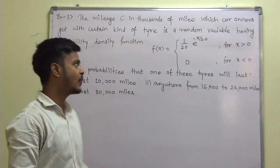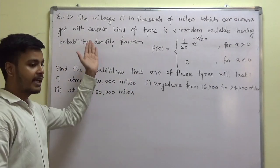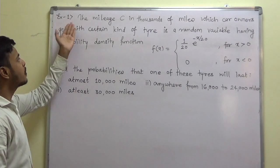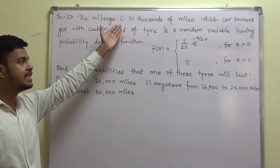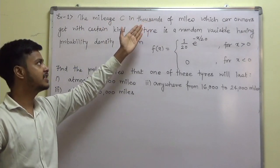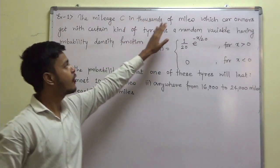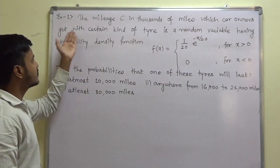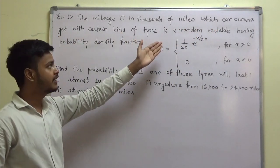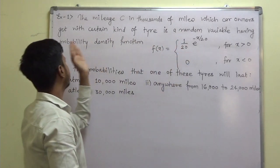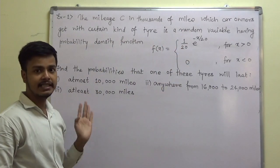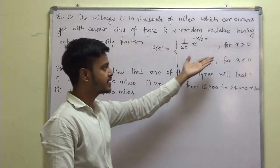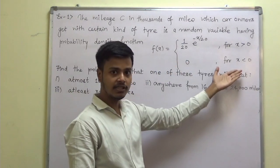Welcome to the very first video example on continuous random variable. This problem says the mileage C, in thousands of miles, which car owners get with a certain kind of tyre, is a random variable having a probability density function. We are given a probability density function with some condition.